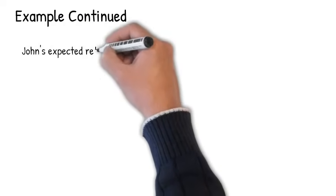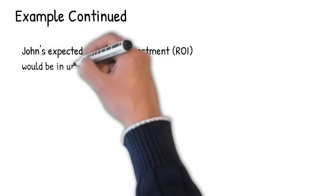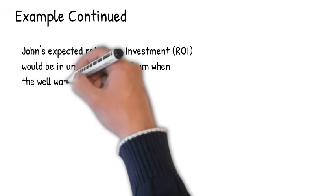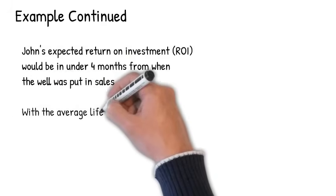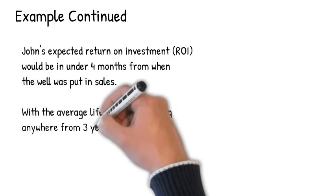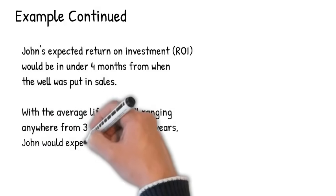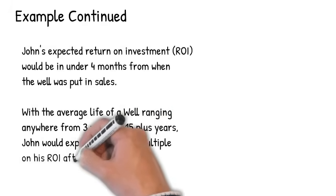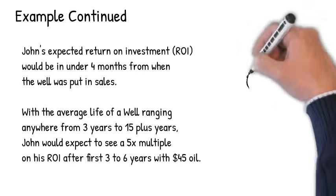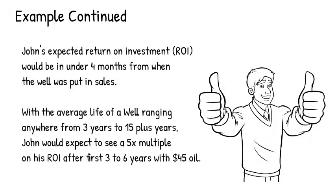Example continued. Based off of John's first monthly revenue check, John should expect a return on investment under four months from when the well was put in sales. With the average life of a well ranging anywhere from three years to 15 plus years, depending on the decline, John would expect to see a five time multiple on his ROI after the first three to six years with $45 oil.